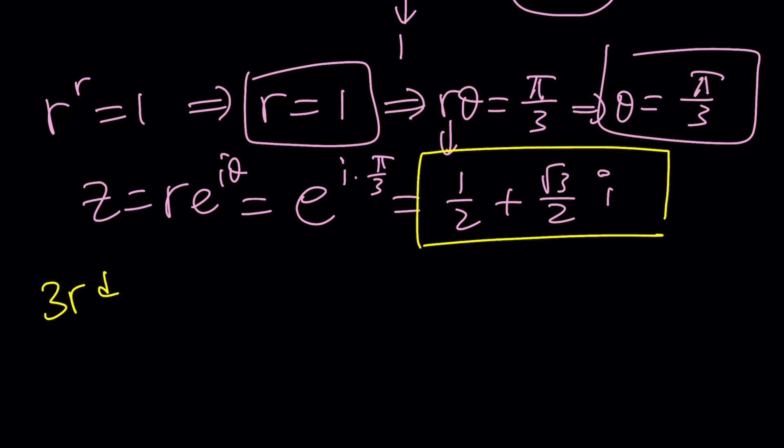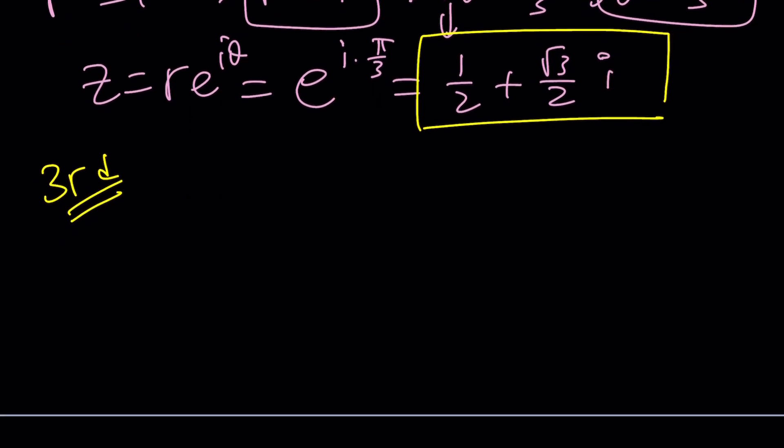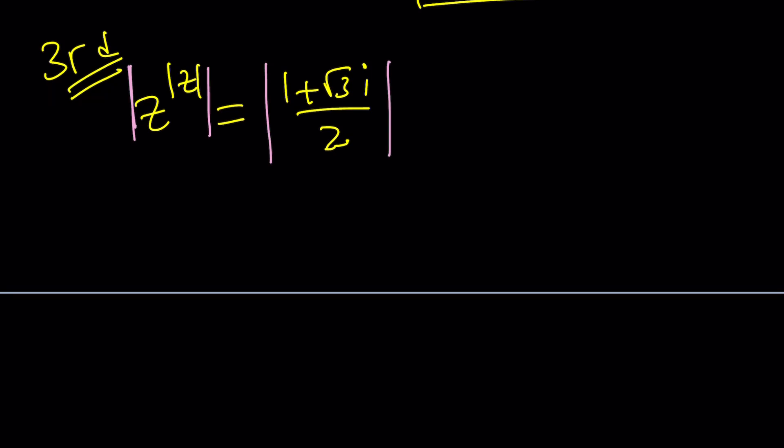All right, let's look at the third method. We have this which is equal to this. I'm going to go ahead and absolute value both sides because if two numbers are equal, their absolute values are also equal, right? And this gives us an interesting identity. Does this always work? Think about it.